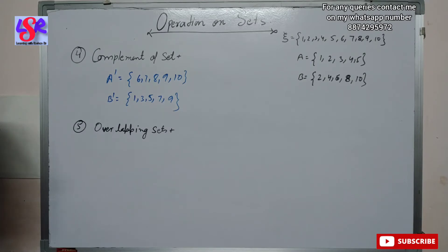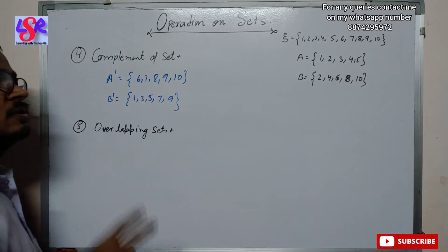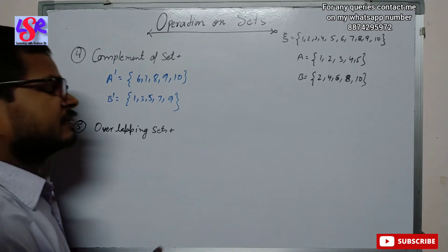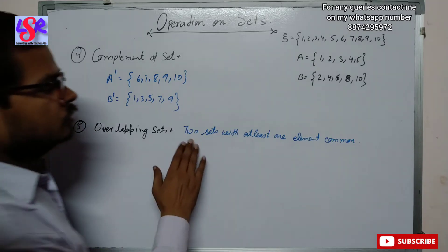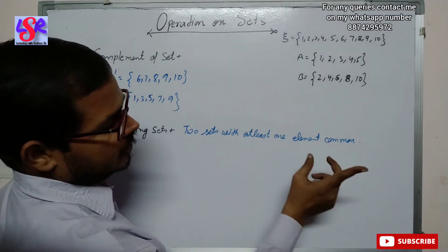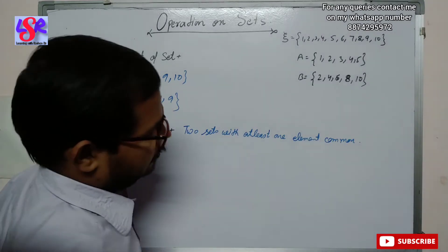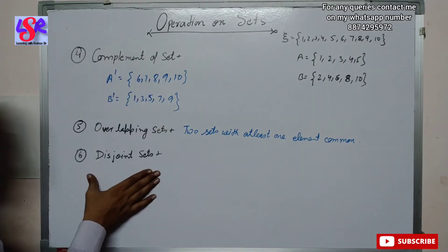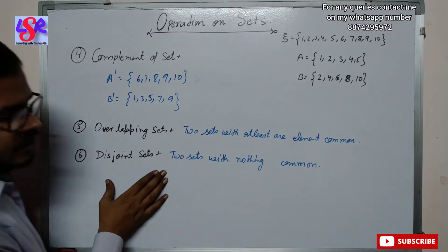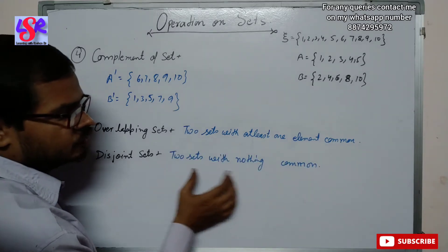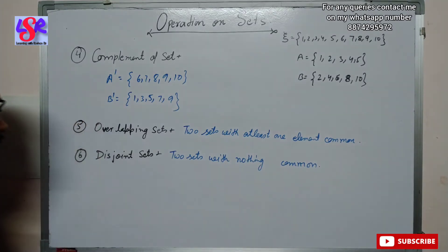Next we have overlapping sets. Overlapping sets are sets in which two sets have at least one element in common. After that we have disjoint sets — in disjoint sets, nothing is common between the two sets. So disjoint sets are two sets with nothing in common.